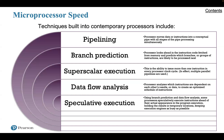Third, superscalar execution — the ability to issue more than one instruction in every processor clock cycle; in effect, multiple parallel pipelines are used. Fourth, data flow analysis: the processor analyzes which instructions are dependent on each other or on data to create an optimized schedule of instructions. Instructions are scheduled to be executed when ready, independent of the original program order, preventing unnecessary delay. Fifth, speculative execution: using branch prediction and data flow analysis, some processors speculatively execute instructions ahead of their actual appearance in the program, holding results in a temporary location to keep the execution engine as busy as possible.